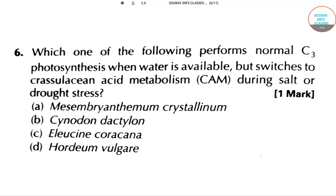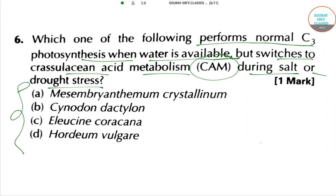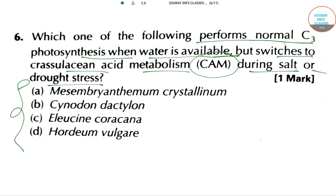Hello students, welcome to Shore of Cell Classes. This question is about the following: which plant performs normal C3 photosynthesis when water is available but switches to Crassulacean Acid Metabolism (CAM) during salt or drought stress? Let's identify the correct answer.